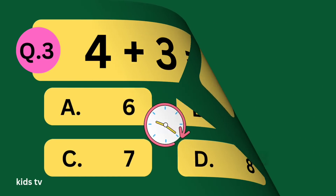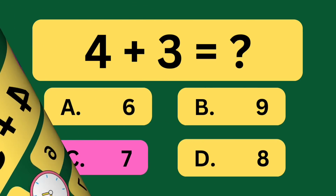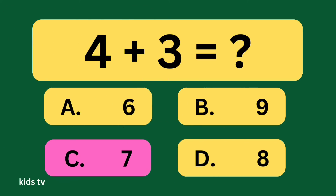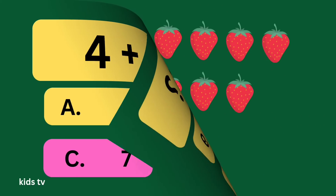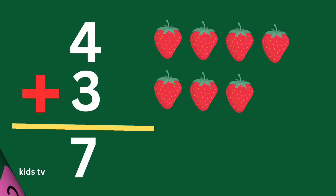The answer is C: 7. Let's count: 1, 2, 3, 4, 5, 6, 7. 4 plus 3 is equal 7.